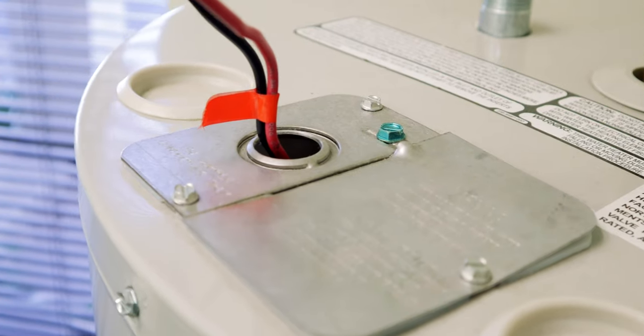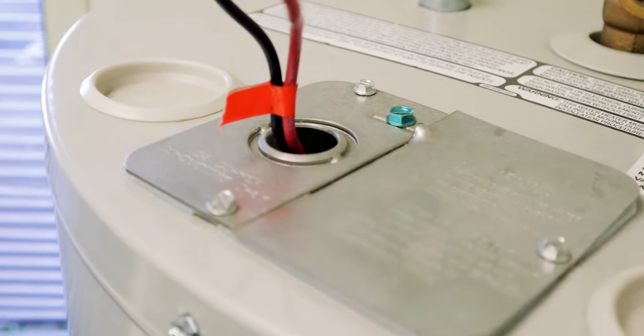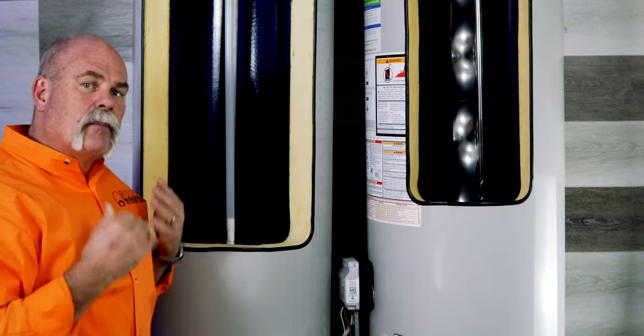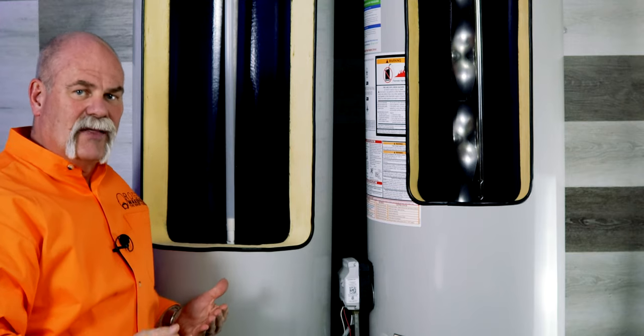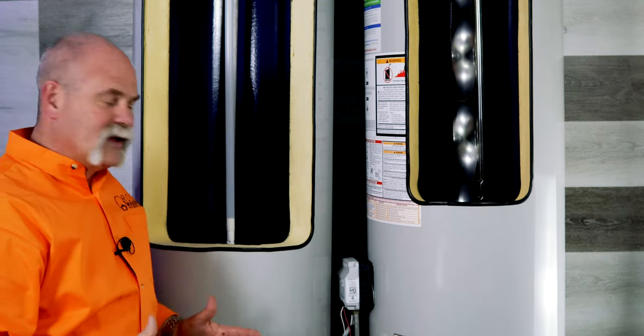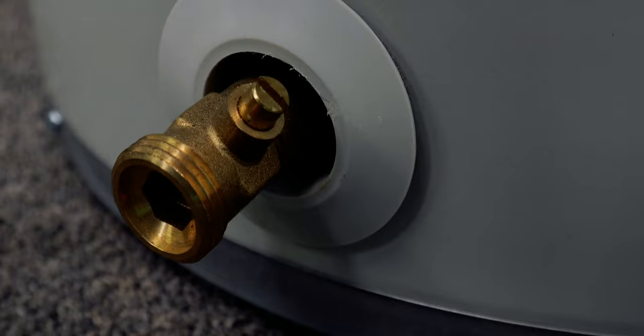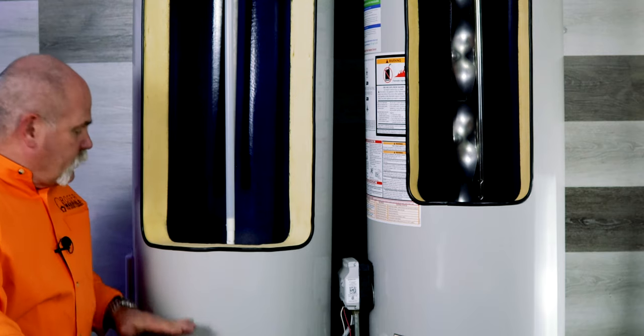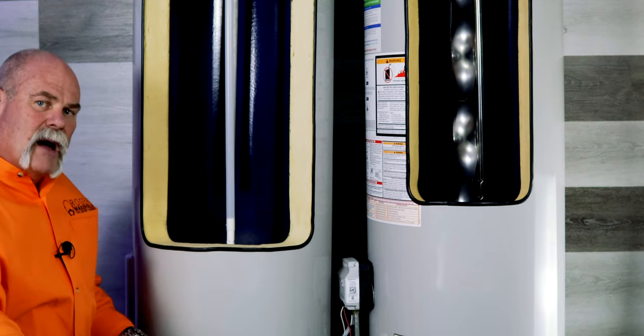On an electric water heater, at the very top you've got the panel where your power comes in. Test it, make sure the breaker's turned off before you open and undo anything. The drain valve is really important - if you flush this water heater every year, you'll keep the calcium and magnesium out of the bottom and make it last longer.